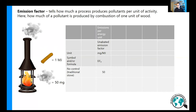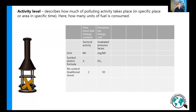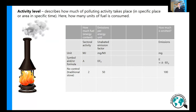The next thing we need to know is how much wood we have. Let's say we put two logs of wood, so that's two megajoules in total. Then simply calculating the emissions is multiplying these two megajoules by the emission factor, and we get total emissions of 100 milligrams.